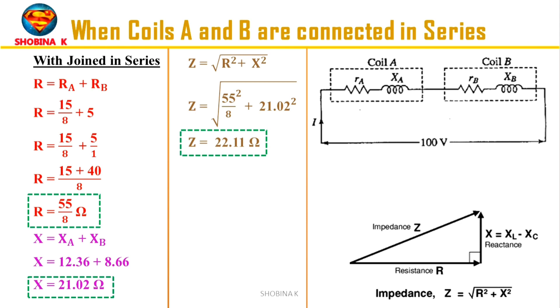And now we calculate Z, and this is the formula to calculate the impedance. Substitute the corresponding values, and now we get the impedance value as 22.11Ω.